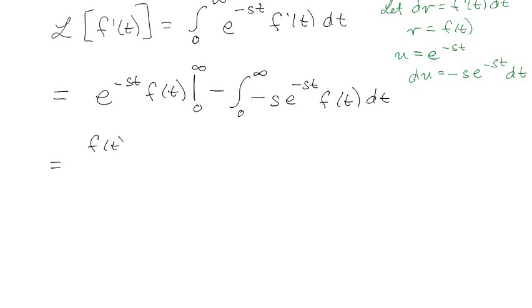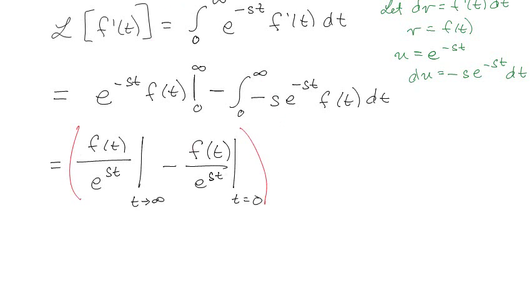So, basically, I'm going to have f(t) over e to the st, and I'm going to do this at t approaching infinity, and subtract off this evaluated at t equals 0, and then plus s times 0 to infinity e to the minus st f(t) dt.